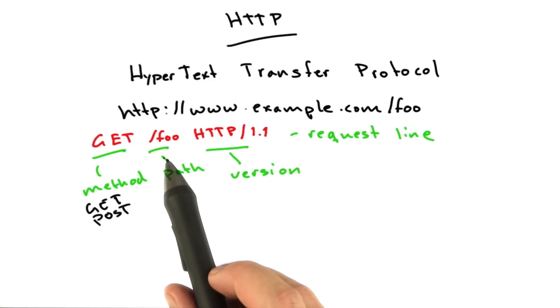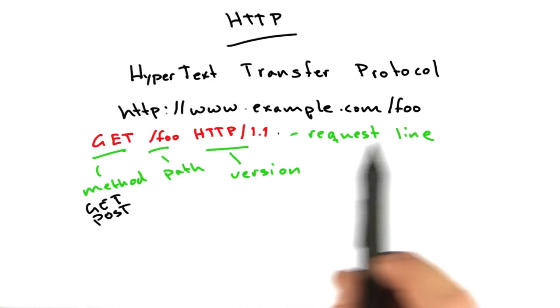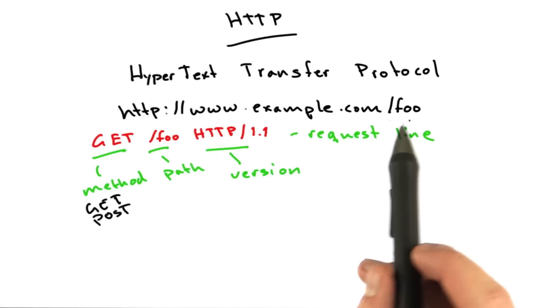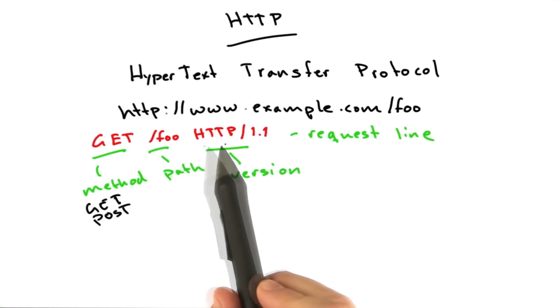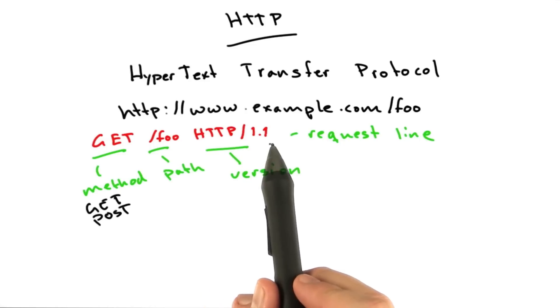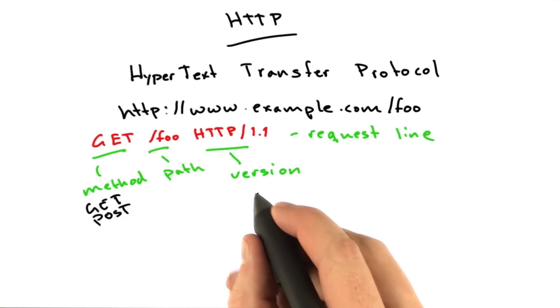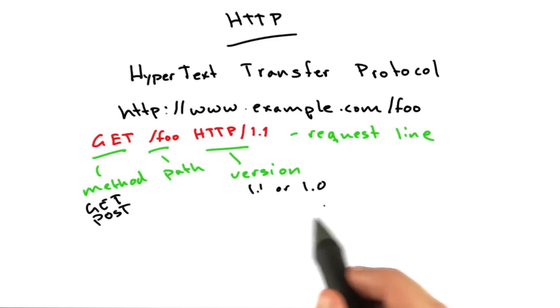Next is the path. In this case, it's /foo. You remember this from the URL, but the path from the URL comes here. This is the actual document we're requesting from the server. And finally is the version. It's always HTTP/ and then a version number. Most browsers and servers these days speak 1.1, but we'll also touch on 1.0 a little bit in this class because 1.0 has a few uses of its own.